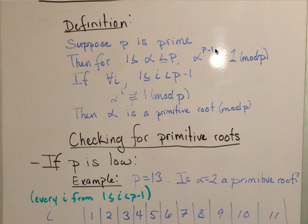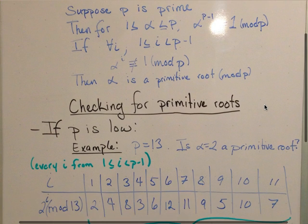So for alpha to the p minus 1 it's congruent to 1, but up until then, right up until p minus 1, it should not be congruent to 1 mod p for it to be a primitive root.